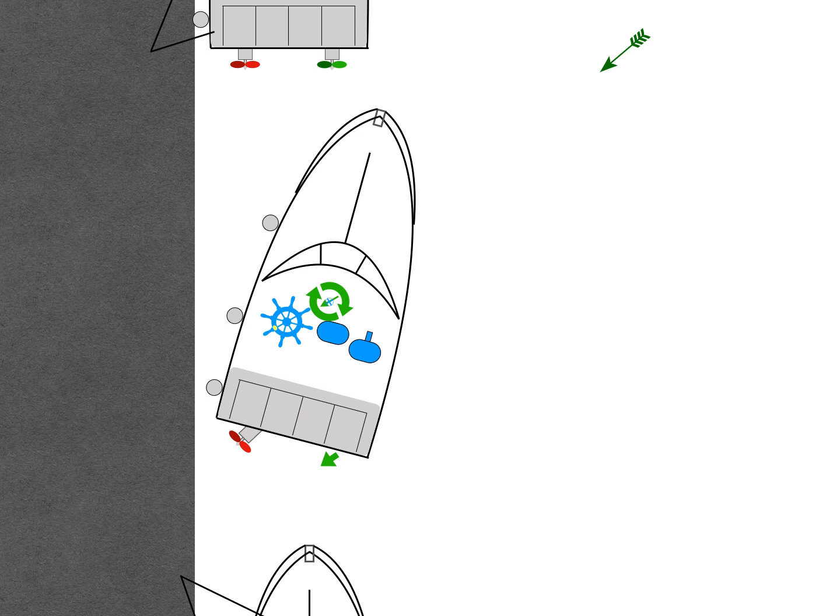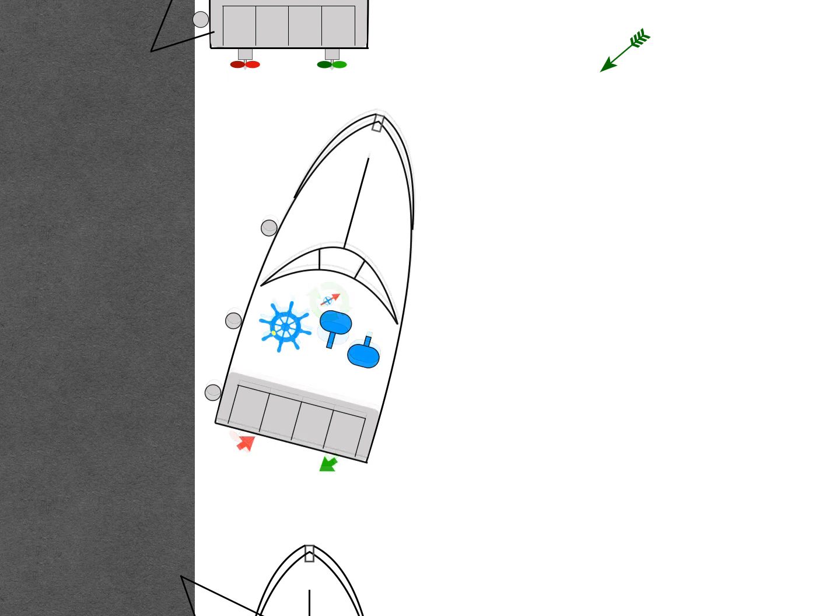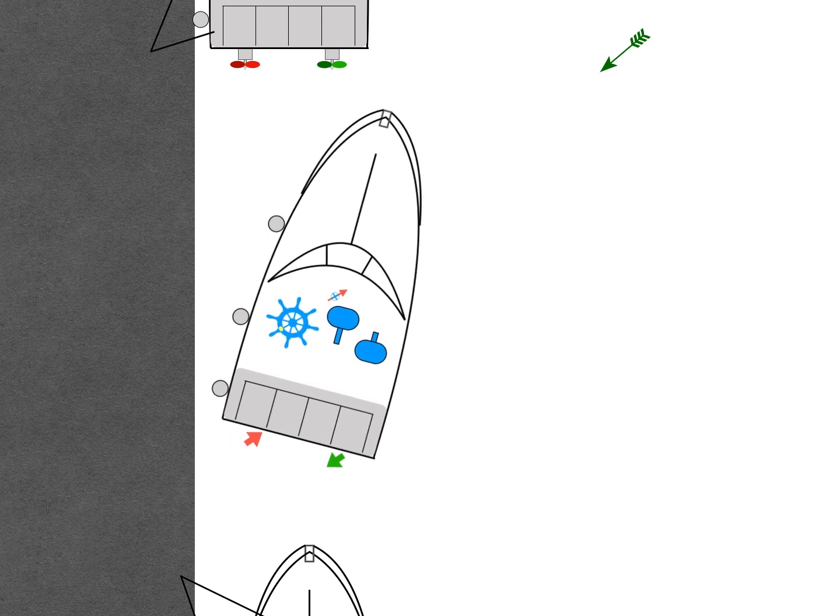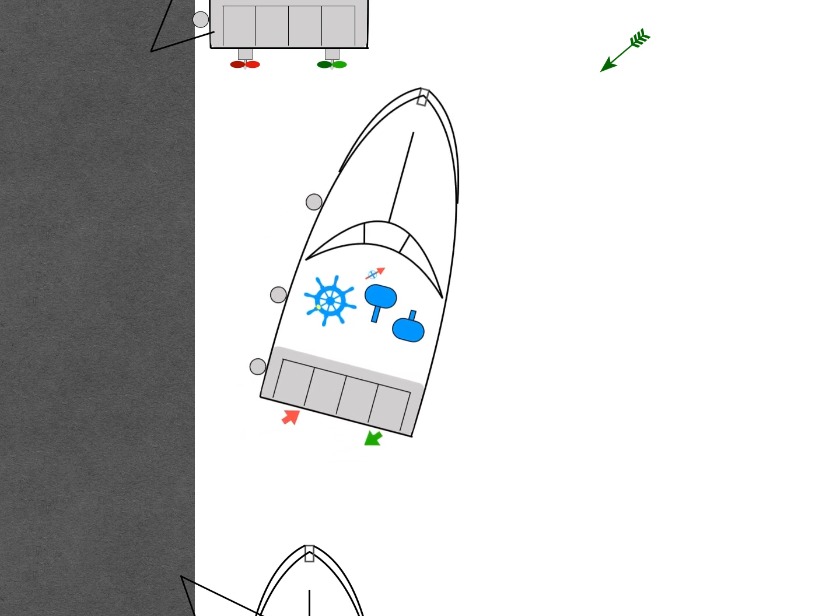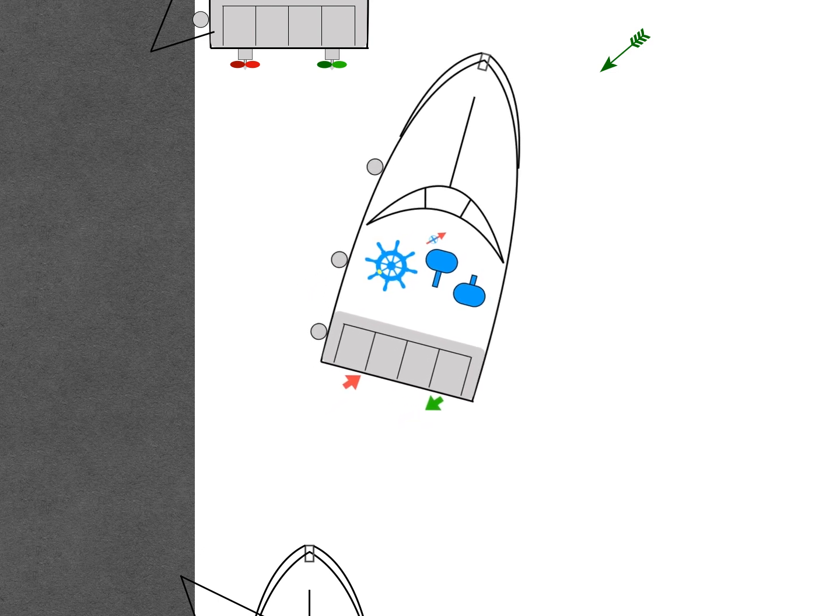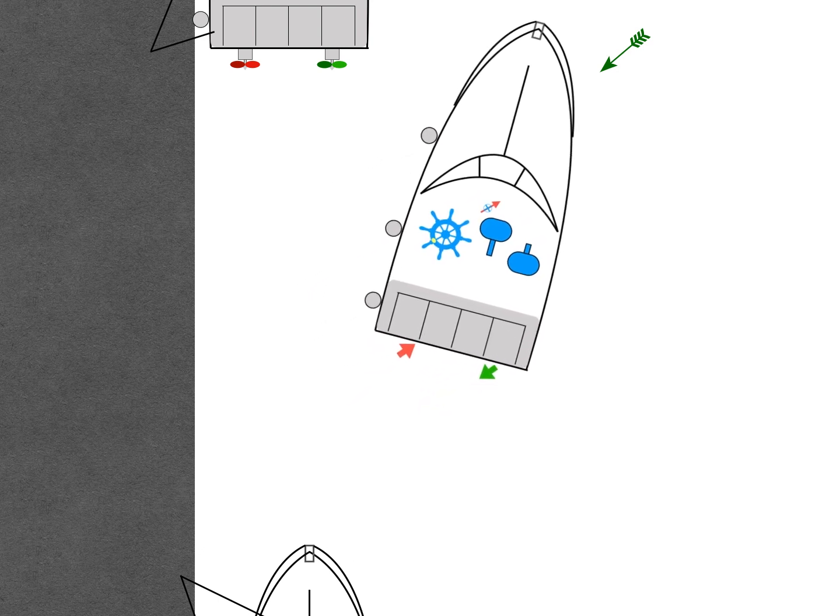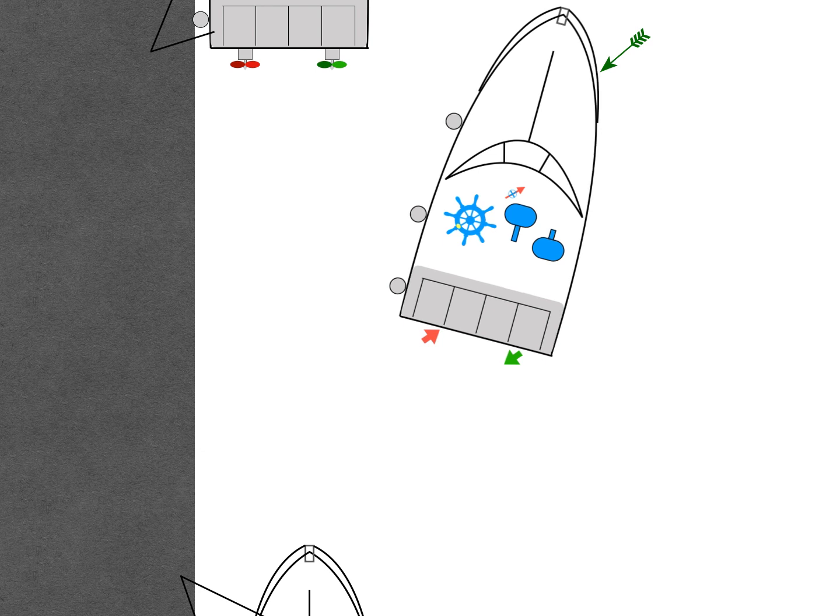As the aft end nears either the dock or the obstruction behind, simply put the throttle back where it was in forward drive. In our example we only had to put the engine from forward into neutral once but you can repeat these steps as many times as necessary on the day.